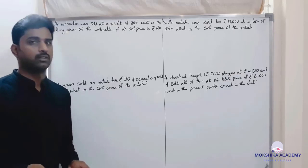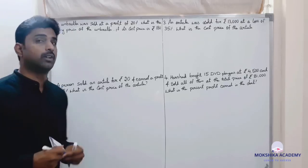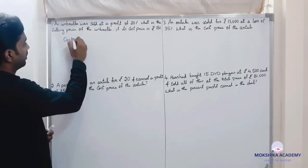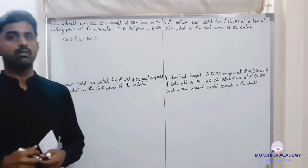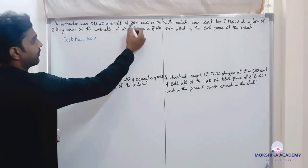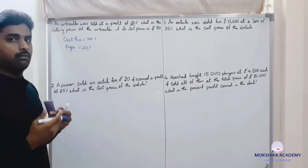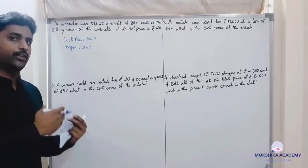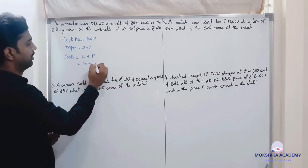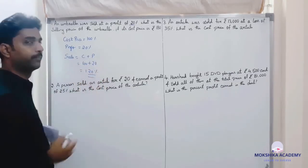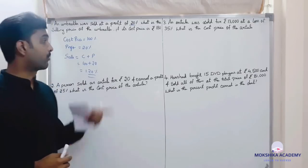Always remember: in profit and loss, the cost price is taken as 100 percent. So cost price is 100 percent. Profit is 20 percent. Therefore, selling price equals cost plus profit, which is 100 plus 20 — that is 120 percent.